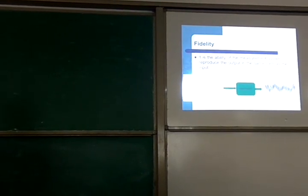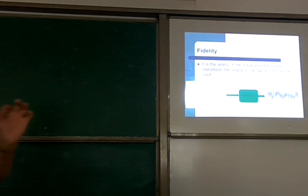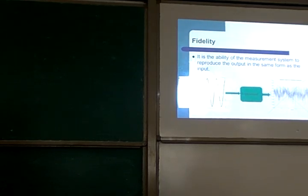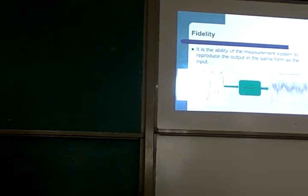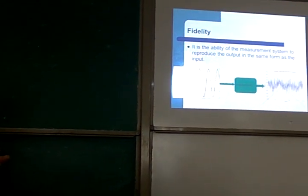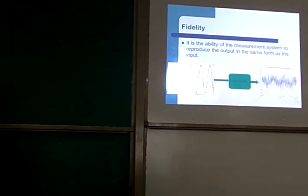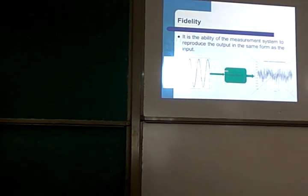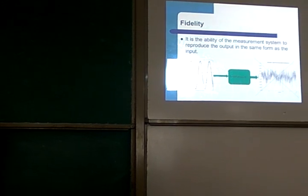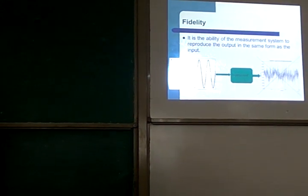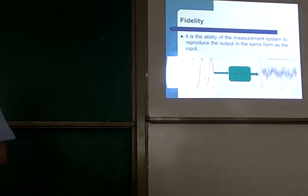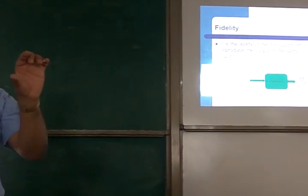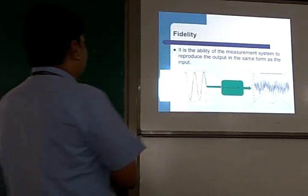Many times we try to identify a number as the result of measurement — for example, temperature: 50 degrees Celsius, where 50 is the number and degree Celsius is the unit. But in certain measurements, the waveform itself is the result of measurement, for example when we measure acceleration, vibrations, or audio signals. In those cases, the signal itself is the result. We may extract many parameters from it. So in those instruments, fidelity is very, very important — the instrument must not distort the shape of the input signal.